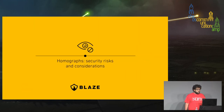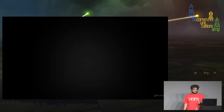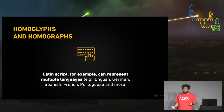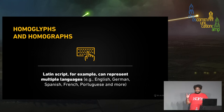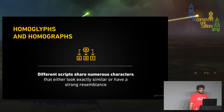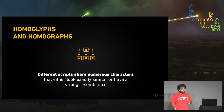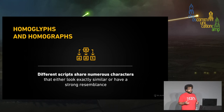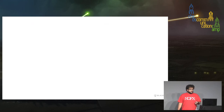Moving on to homographs and their security risks. The Latin script can represent a variety of languages — Portuguese, Spanish, English, Italian, French, and more. Importantly, different scripts share numerous characters that either look exactly similar or have a very strong resemblance. For example, the letter 'A' in Latin has a very strong resemblance to something similar in Cyrillic or the Greek alphabet. These are called Confusable Homographs.